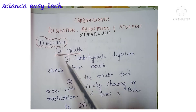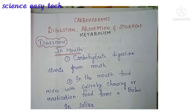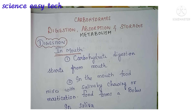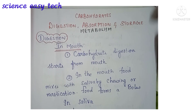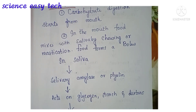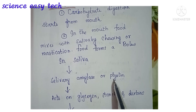Digestion of carbohydrates starts in the mouth itself. The food is mixed with saliva by means of chewing, which is otherwise called as mastication. The food mixes with saliva to form a bolus. In saliva, there is a special enzyme called salivary amylase, or ptyalin. Here the 'P' is silent, which is why it is pronounced as ptyalin.